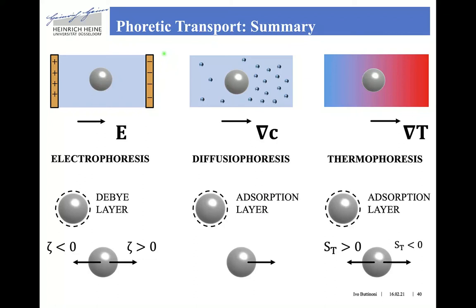Here I summarized the main features of phoretic transport of 3D suspended colloids, where phoretic migration can occur either in an external electric field, as in the case of electrophoresis, or inside a concentration gradient of neutral solutes — diffusophoresis — or when the particle is surrounded by a temperature gradient.